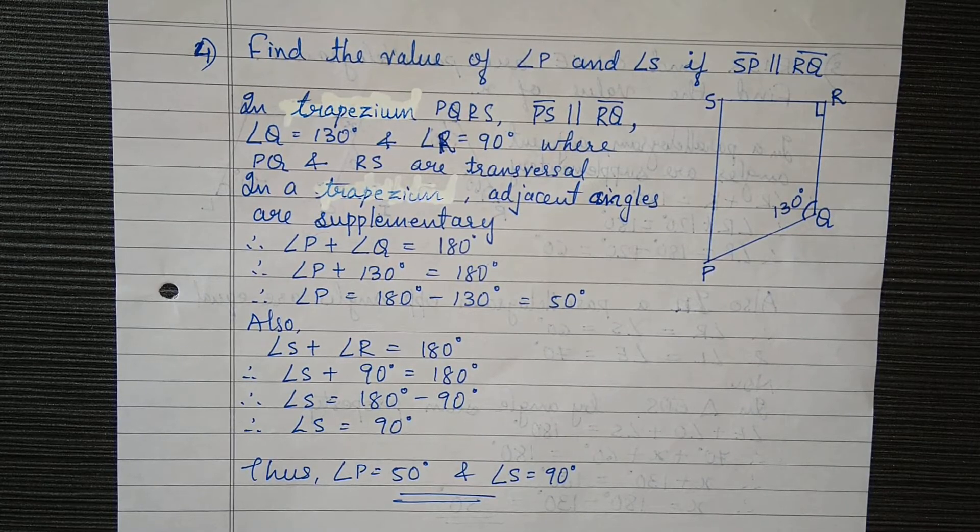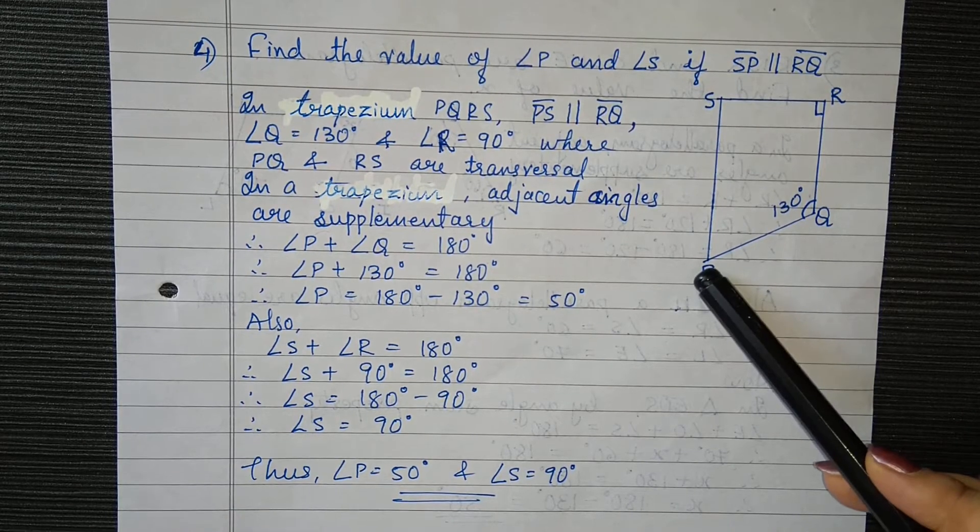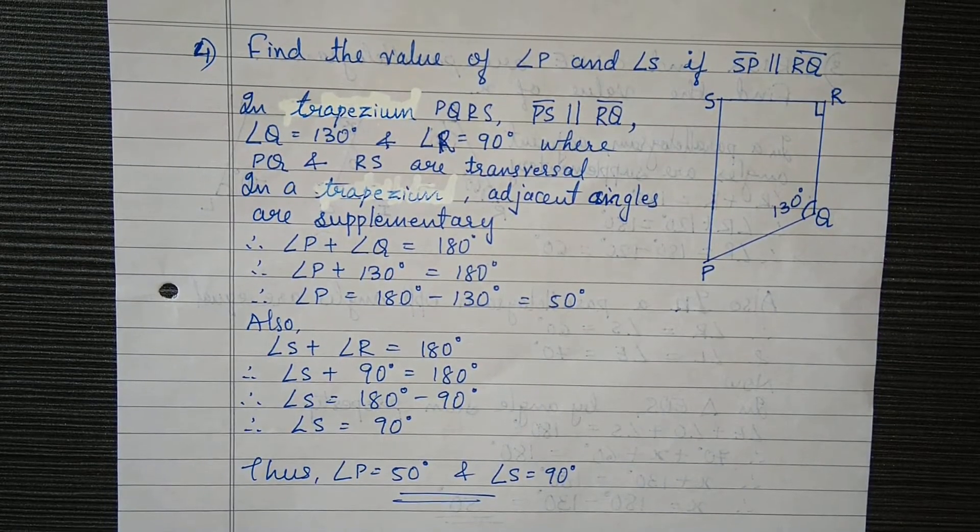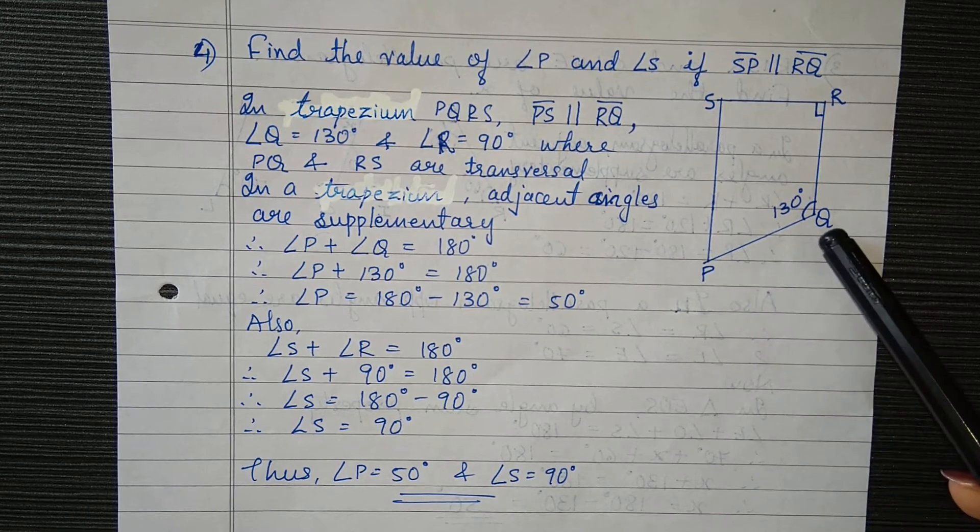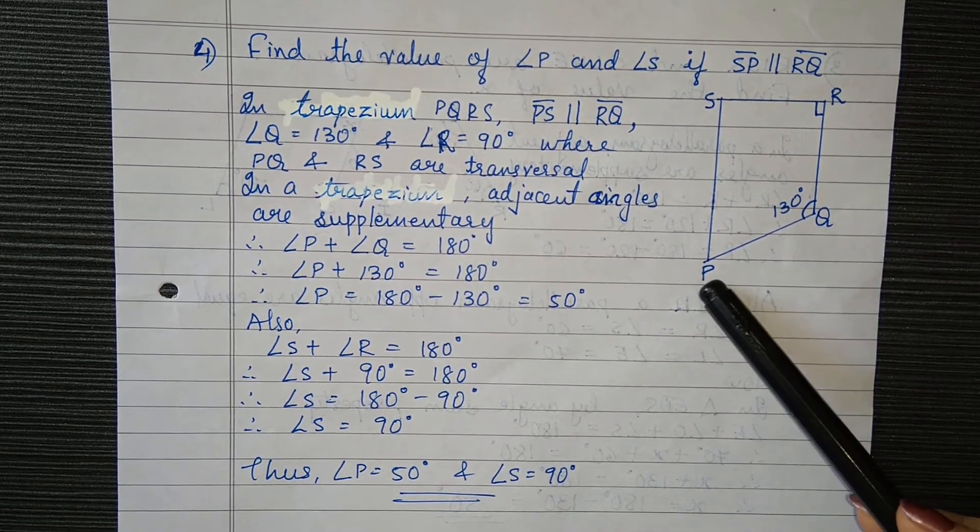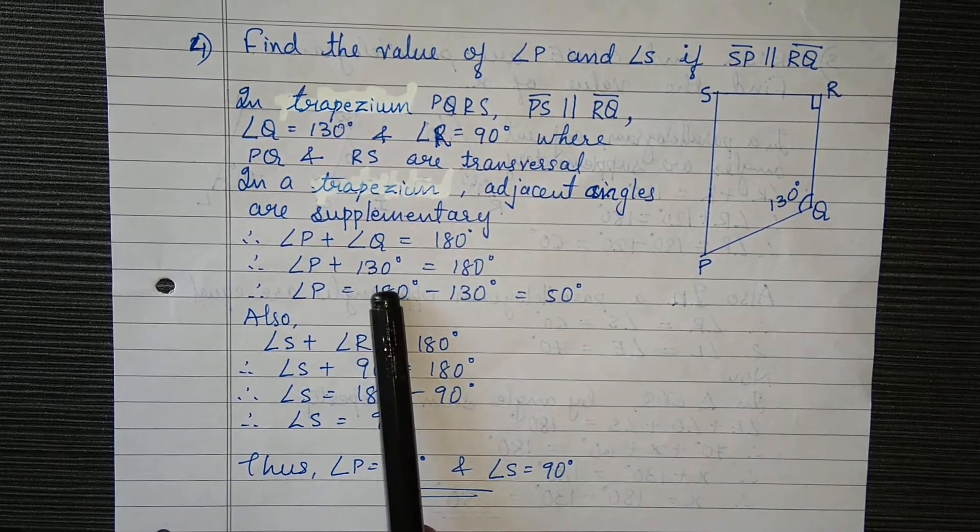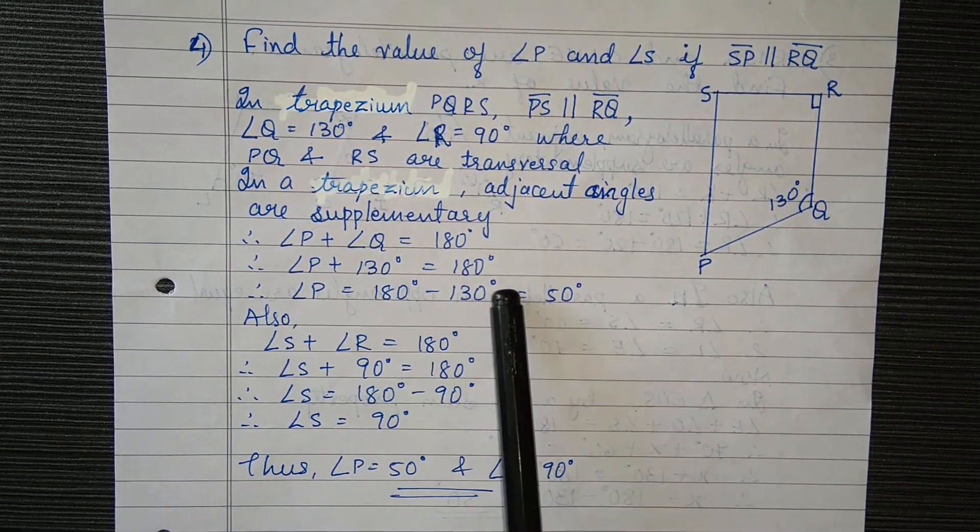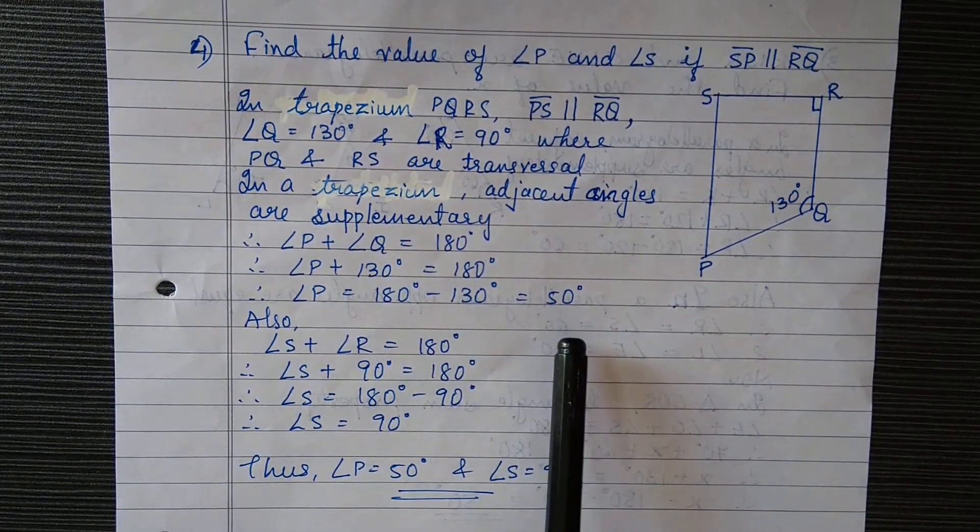In a trapezium, adjacent angles are supplementary. So angle P plus angle Q equals 180 degrees. We know Q is 130 degrees, so angle P plus 130 equals 180. Therefore, angle P will be 180 minus 130, which is 50 degrees.